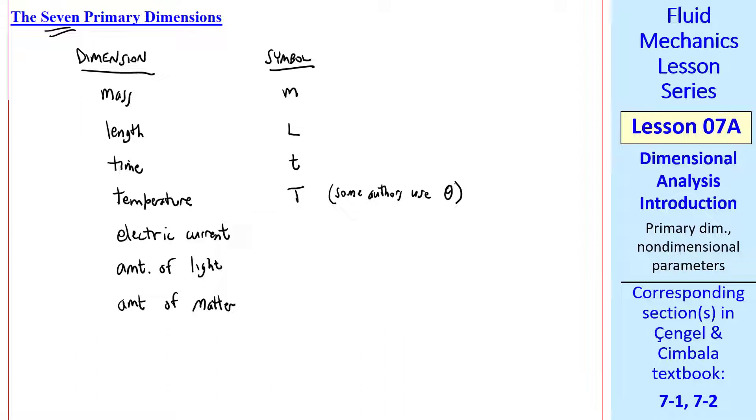Some authors use Greek letter theta, but that looks too much like an angle, so we use capital T. Electric current, capital I, amount of light, C, and amount of matter, N.